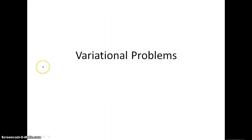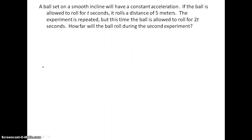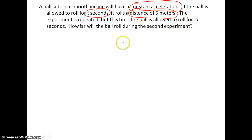Let's look at some variational problems. A ball is set on a smooth incline and will have a constant acceleration. If the ball is allowed to roll for t seconds, we have constant acceleration and a distance of five meters. The experiment is repeated but this time the ball is allowed to roll for 2t seconds. How far will the ball roll? We can see we have acceleration, distance, and time — which formula relates those three things?